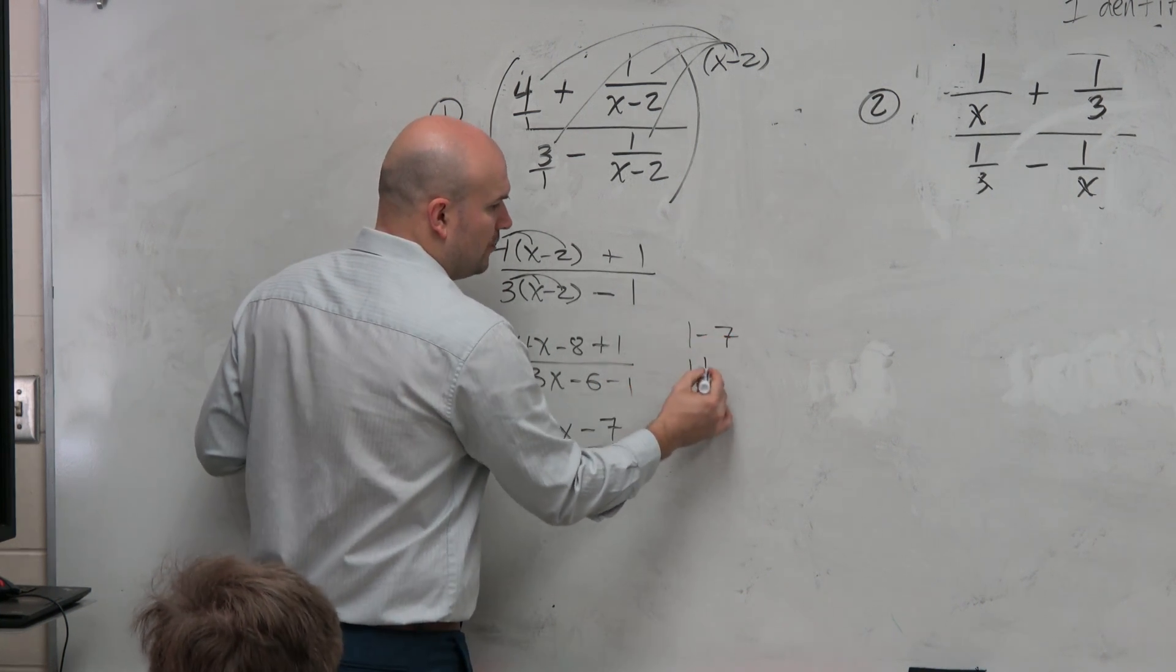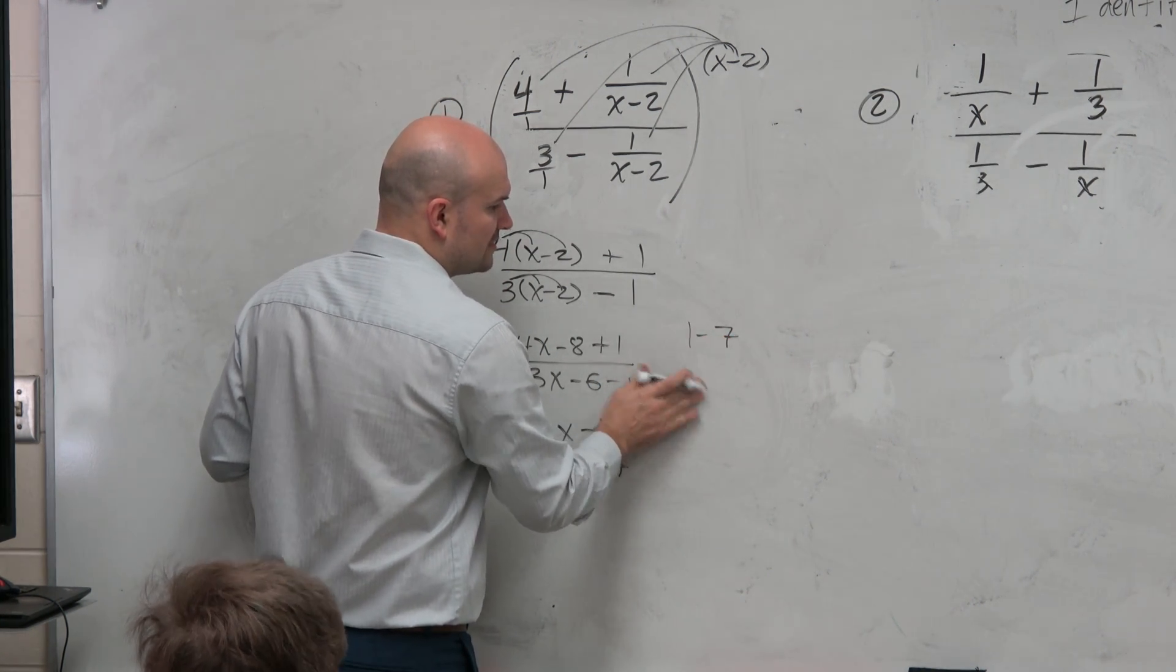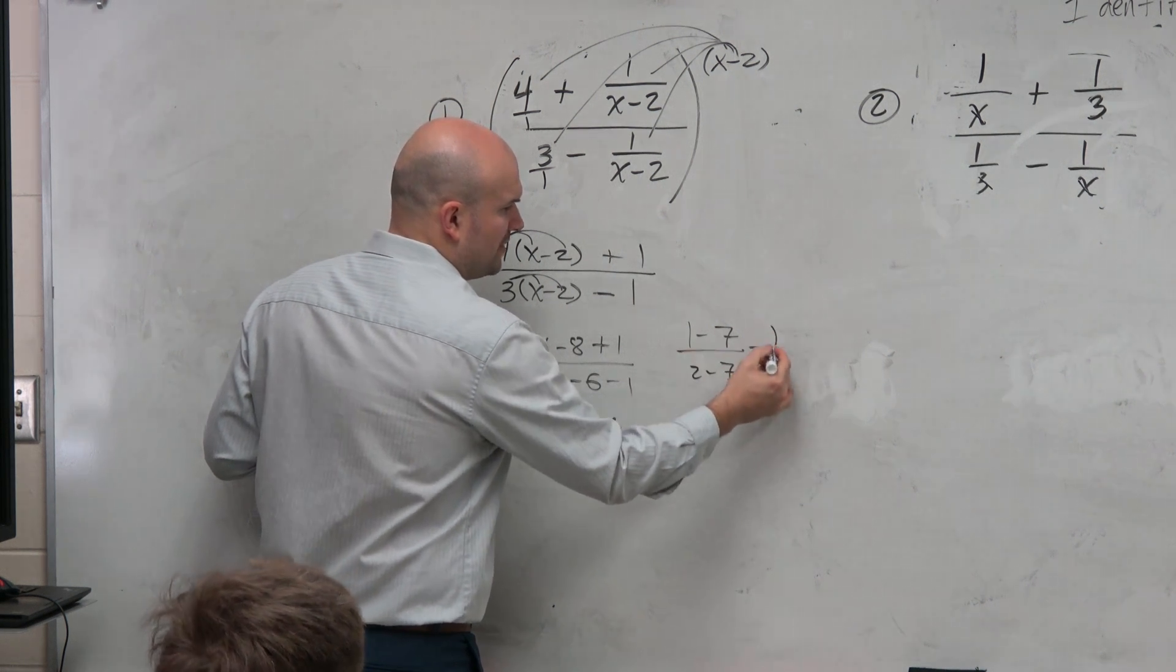Like for instance, 1 minus 7, or 2 minus 7. Does that just equal 1 half?